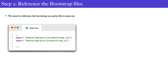The second step is to reference the Bootstrap files. Once we install the Bootstrap dependency, it will not automatically apply changes. We have to reference the Bootstrap CSS file and the JS file inside our main.tsx file, because main.tsx is the one that renders the app component. If we reference it there, it will apply the design throughout the application.